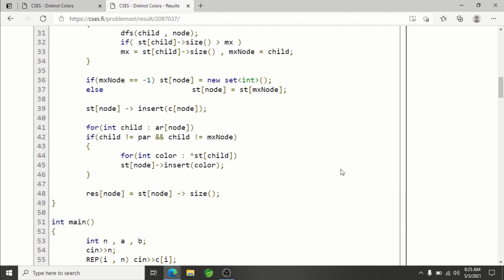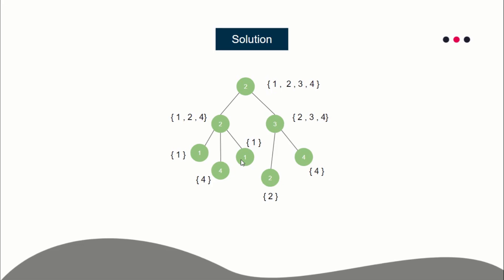Why O(n log n)? Because we are using sets, each insertion takes O(log n) time where n is the assumed size of the set. This introduces a log n factor. The underlying algorithm itself runs in O(n) due to the smaller-into-bigger technique, and the log n factor is introduced by using sets, giving a final complexity of O(n log n).